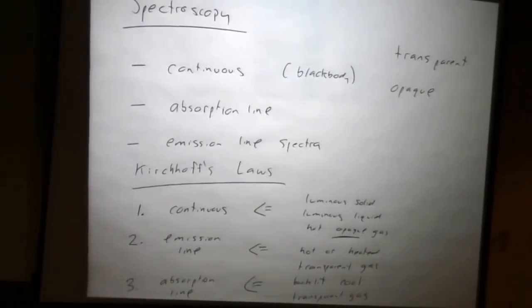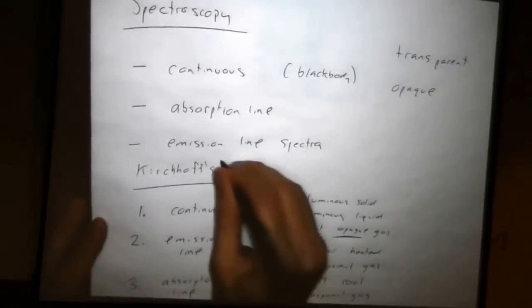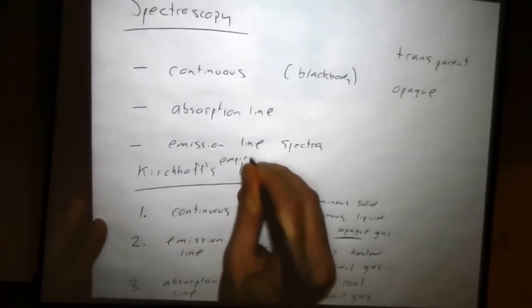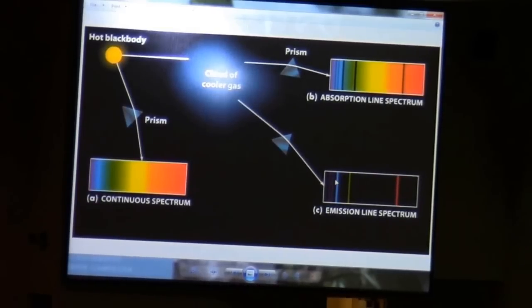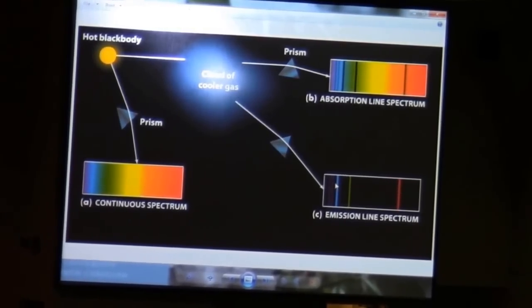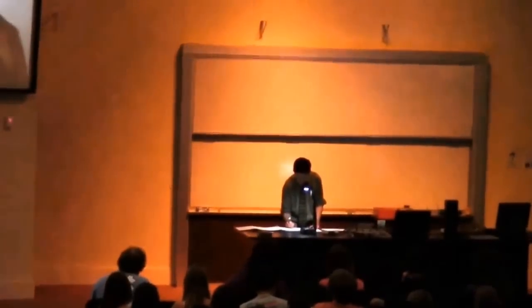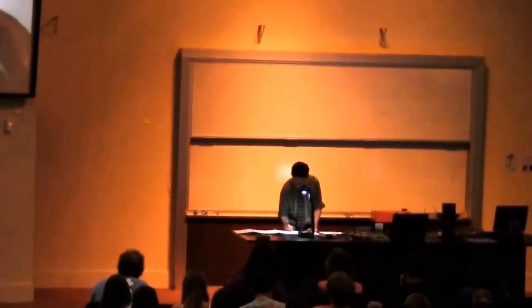So those are Kirchhoff's laws. These are empirical. We talked about different types of laws. These are purely empirical. It's not trying to explain them physically, but they're useful to know. We can use this as a tool, even if we don't understand what's going on physically. I haven't yet explained why this is the case, but we can use it as a tool to learn compositions and temperatures.